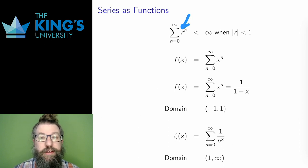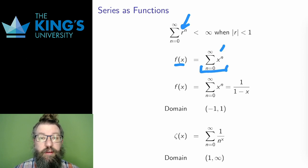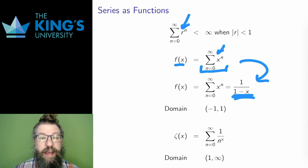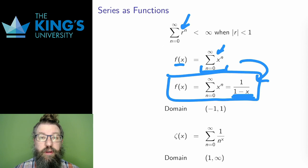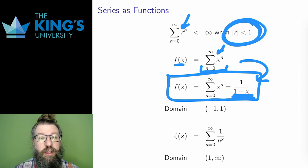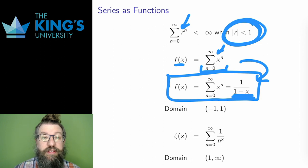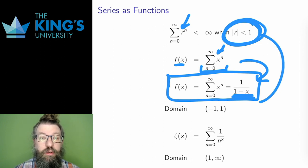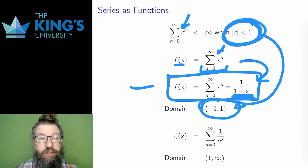If x is a variable, I can define a function f as the infinite series from 0 to infinity of x to the n. I know from the geometric series that this evaluates to 1 over 1 minus x. But now I have a different way to write that function as a series. What is the domain of this function? This function only makes sense if the series converges; otherwise the series is not a number and the function has no output. Therefore, the domain is the parameter limitations of the common ratio: negative 1 to 1. Now I have a function defined by a series, and the domain is the places where the series converges.